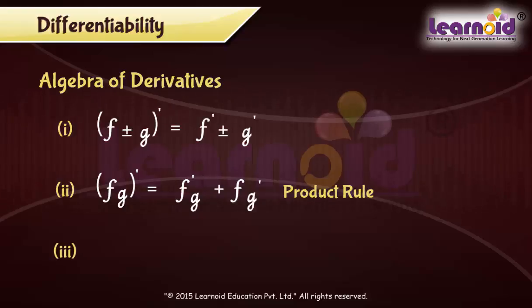Third rule is quotient rule. Derivative of f/g is equal to f'g minus fg' by g squared, wherever g is not equal to 0.